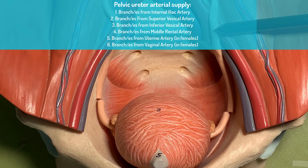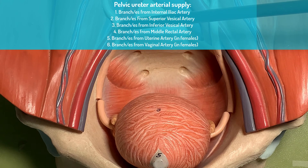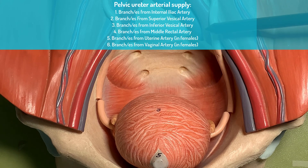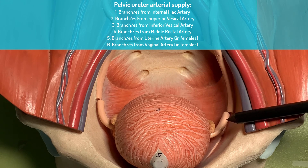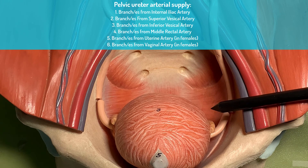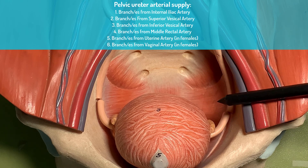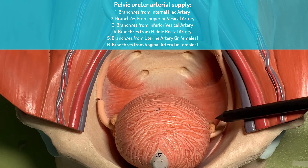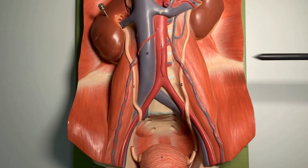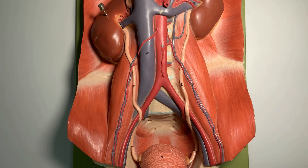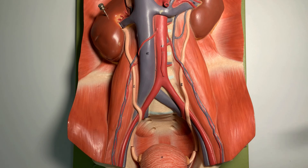The pelvic ureter gets its supply from the internal iliac artery, from the superior and inferior vesical arteries, from the middle rectal artery, and in the female from the uterine and vaginal arteries. These branches cannot all be shown on this model as they are very tiny. The ureter has a long course and each part is enriched with different arteries from the neighboring area, forming a longitudinal plexus. Despite this seemingly rich supply, during surgical maneuvers caution must be taken with minimal movement of the ureter, as this organ is very liable to undergo ischemia.